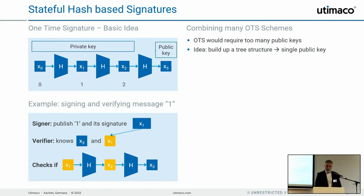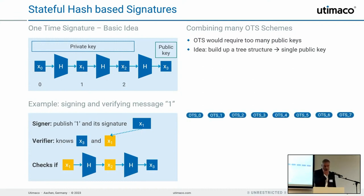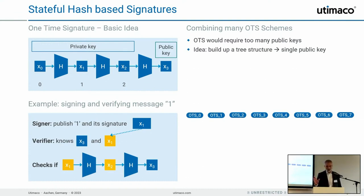We can only use these hash chains once, because if I release one hash value, I could reuse parts of the chain to generate new signatures. This is what we call the OTS scheme — a one-time signature scheme. We could use this approach directly to sign an arbitrary number of messages, but it's very inefficient because for each signature we need to establish a separate OTS setup with different private and public keys. This creates a huge problem for many use cases.